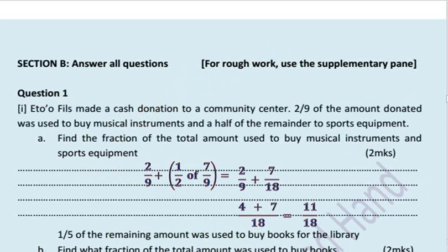Eto'o Fils made a cash donation to a community center. 2/9 of the amount donated was used to buy musical instruments and a half of the remainder for sports equipment. Find the fraction of the total amount used to buy musical instruments and sports equipment. Here we have 2/9 which was for musical instruments and a half of the remainder. The remainder is 7/9 and a half of that gives us 7/18. And 7/18 plus 2/9 gives us 11/18.